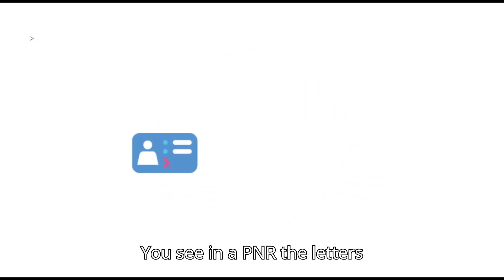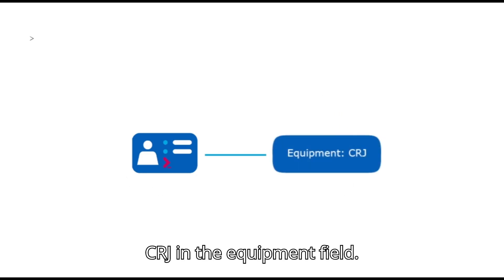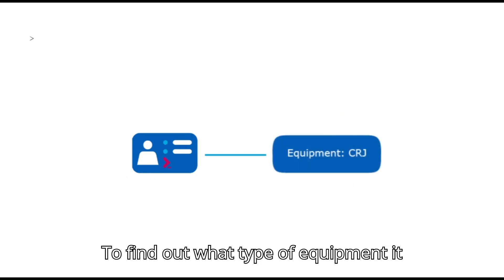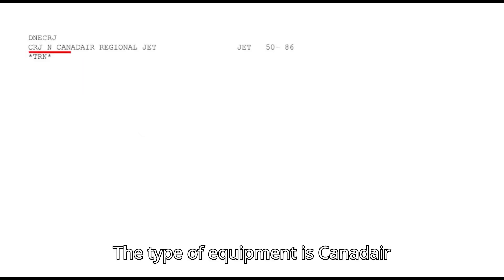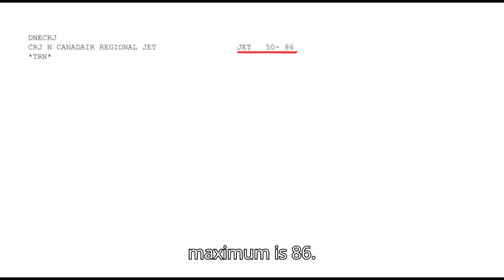You see in a PNR the letters CRJ in the equipment field. To find out what type of equipment it refers to, enter DNE CRJ. The type of equipment is Canadair Regional Jet. The minimum capacity for passengers is 50 and the maximum is 86.